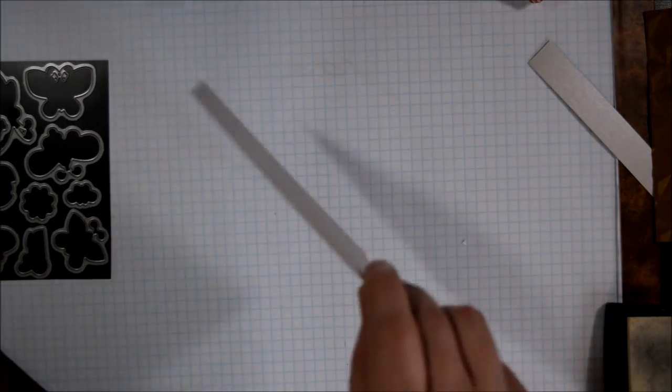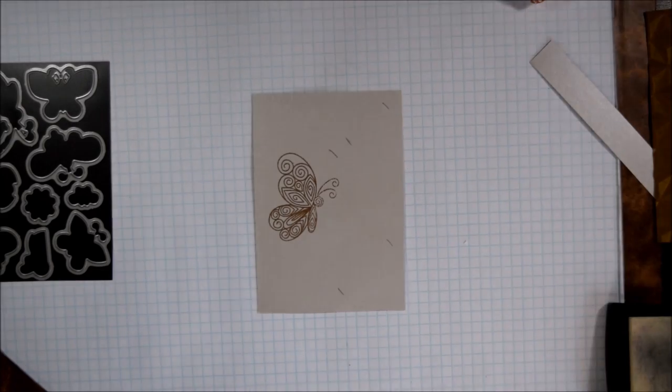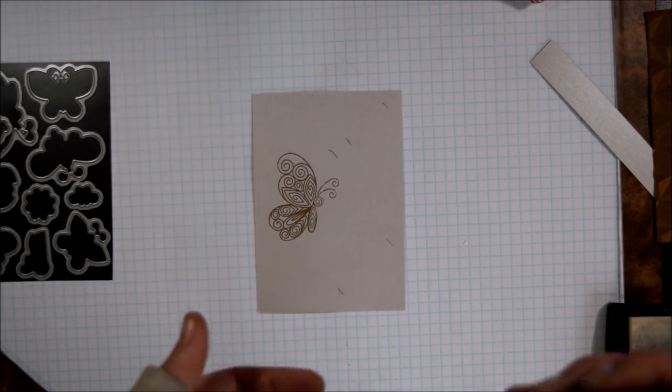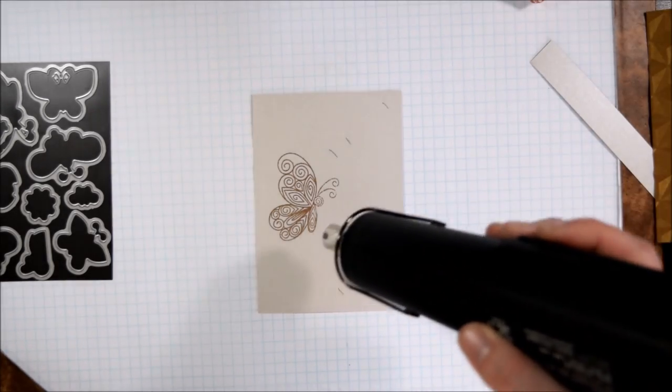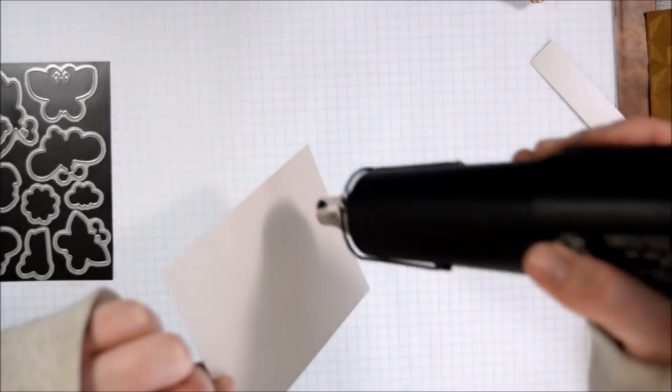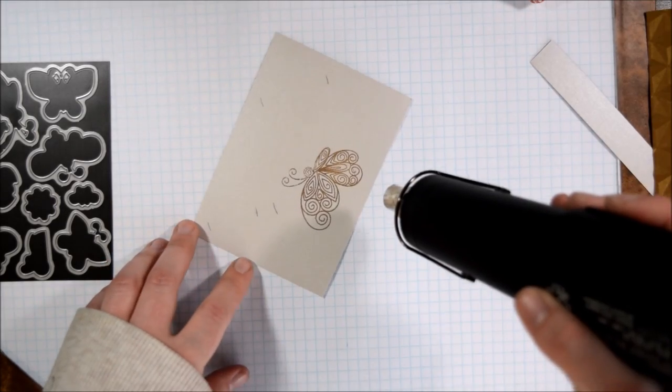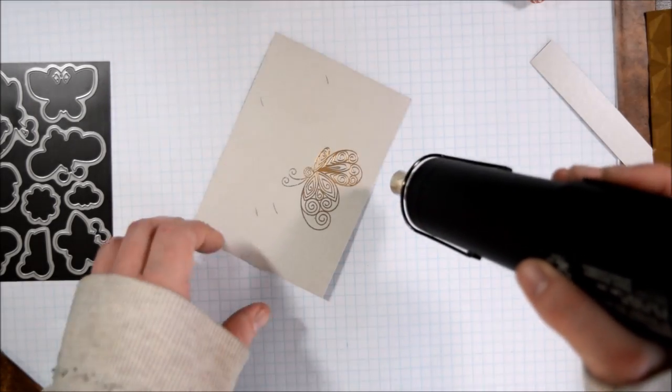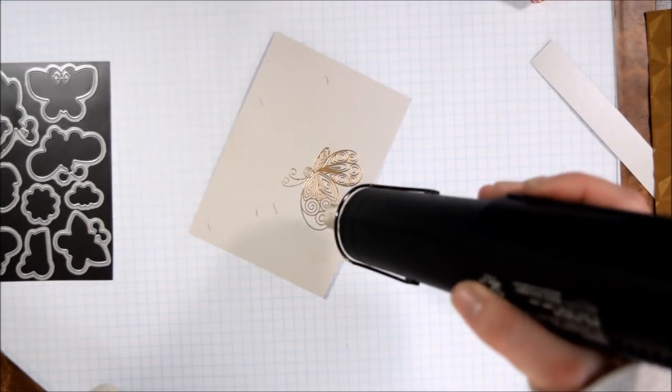I made sure to use my embossing powder bag before I did this because with gold embossing powder you do get some static. You get some static with most embossing powder. I find clear to be the easiest, but because I want a very certain look I want to make sure that I don't get stray embossing powder.